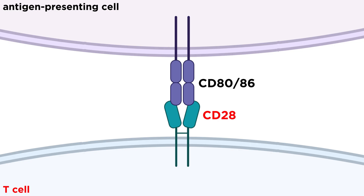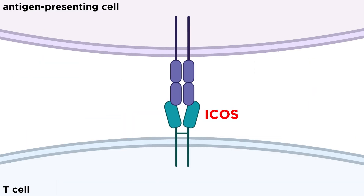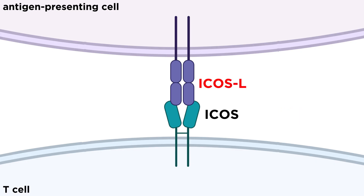Co-stimulation is carried out by co-stimulatory receptors. T cells express CD28, which is a co-stimulatory receptor for protein ligands called CD80 and CD86, expressed on antigen-presenting cells like B cells, macrophages, and dendritic cells. Binding of CD80 or CD86 causes T cells to receive survival and proliferation signals after binding to their target antigen. Another co-stimulatory receptor on T cells is ICOS (inducible co-stimulator), which binds to ICOS ligand on antigen-presenting cells. ICOS binding is especially important for preparing CD4 T cells to help B cells.